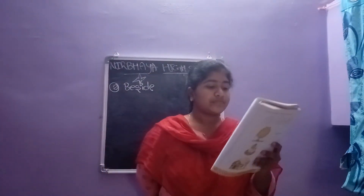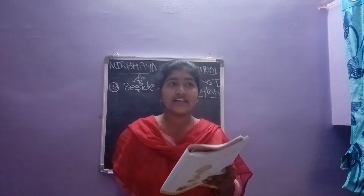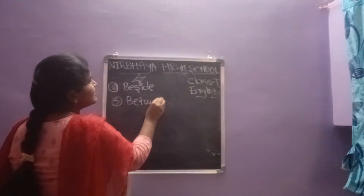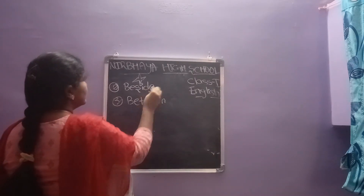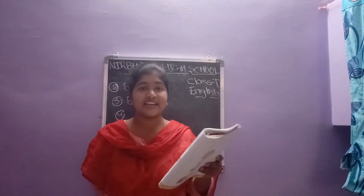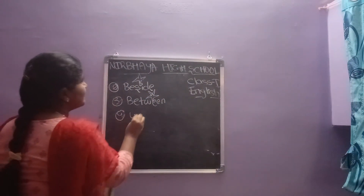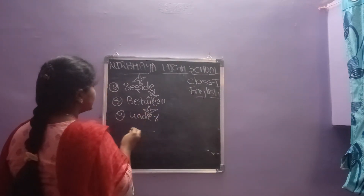Next, third one: the ball is between the boxes. Where is the ball, children? The ball is between the boxes. 'Between' is the position word. Draw the star. Fourth one: the owl is under the box. What is the owl's position? Under the box. So 'under' is the position word. Draw the star.